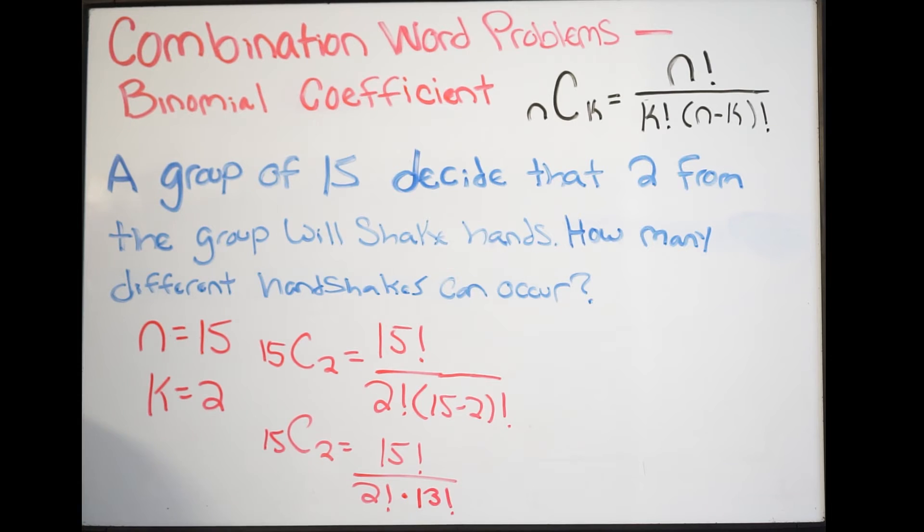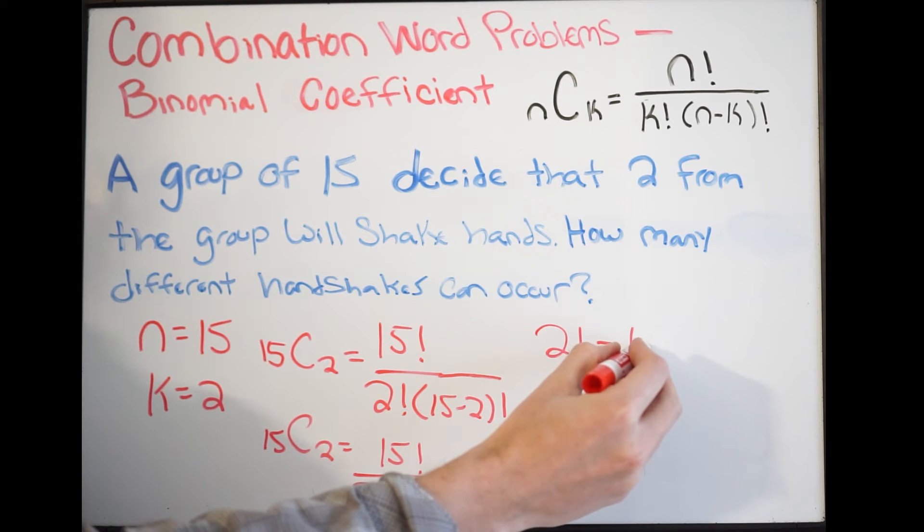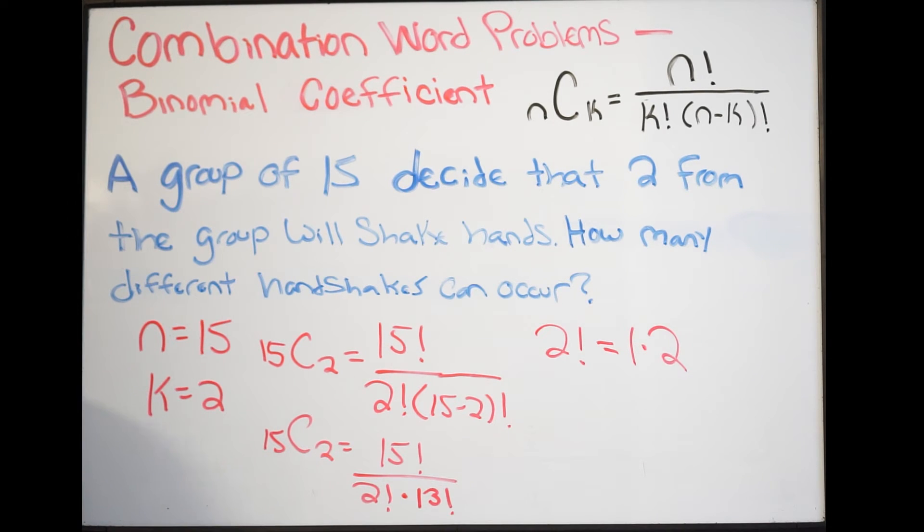At this point, we can simply enter this into our calculator. There's no reason to do this by hand. A factorial simply means we're multiplying consecutive integers starting from 1 and going to our value in question. For example, 2 factorial would be 1 times 2.